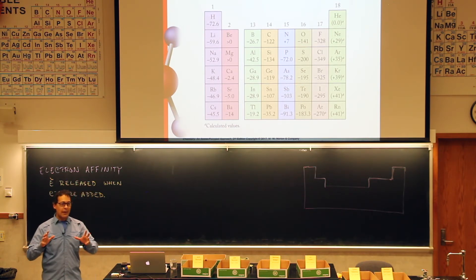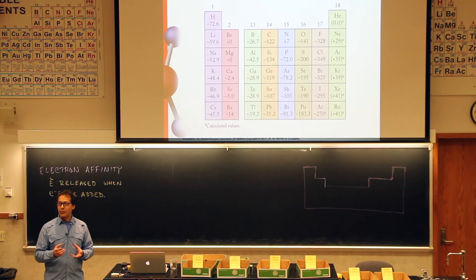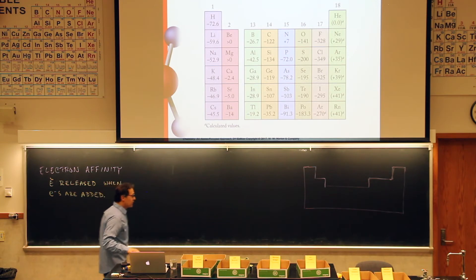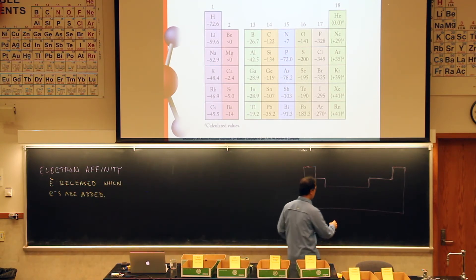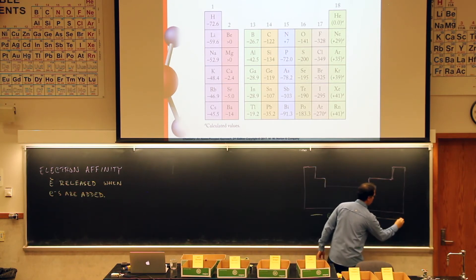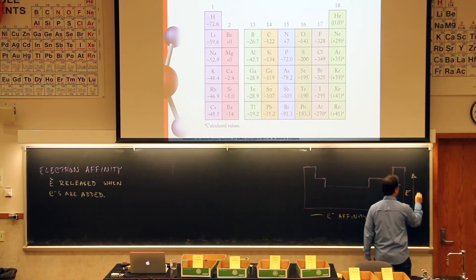General trends, though. Which part of the periodic table would release the most energy? It's a little tricky because we've got these negative numbers, so the bigger the negative number, the more energy is released. So it seems as though that our electron affinity tends to go towards the right and tends to go towards the top.